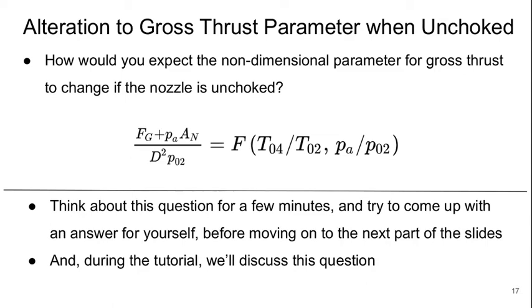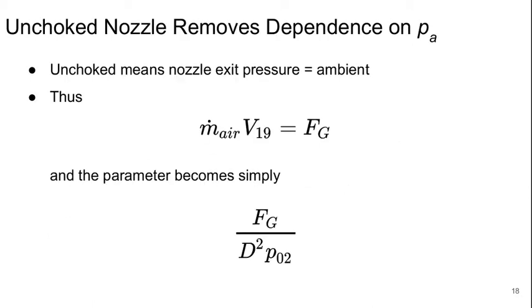Welcome to Part 3 of Lecture 14 of Aerospace Propulsion. We left off with this question of how would this parameter look different if the nozzle was unchoked. We'd be able to get rid of that dependence on the atmospheric pressure because the nozzle exit pressure equals the ambient pressure. Simply, the gross thrust is m_air times V19, so the parameter becomes just F_G over D squared p02.